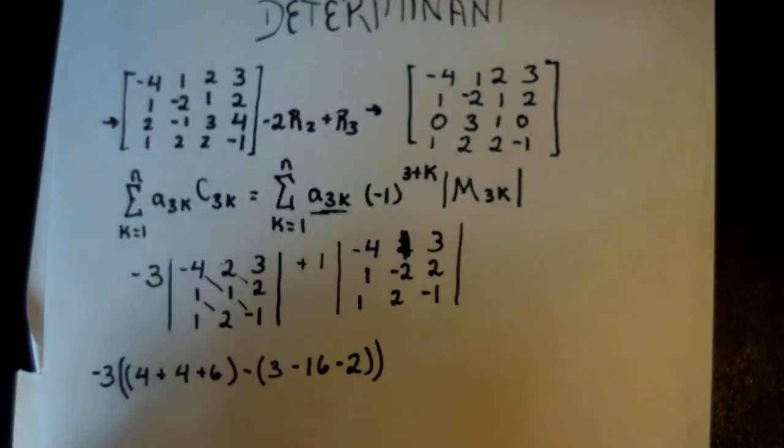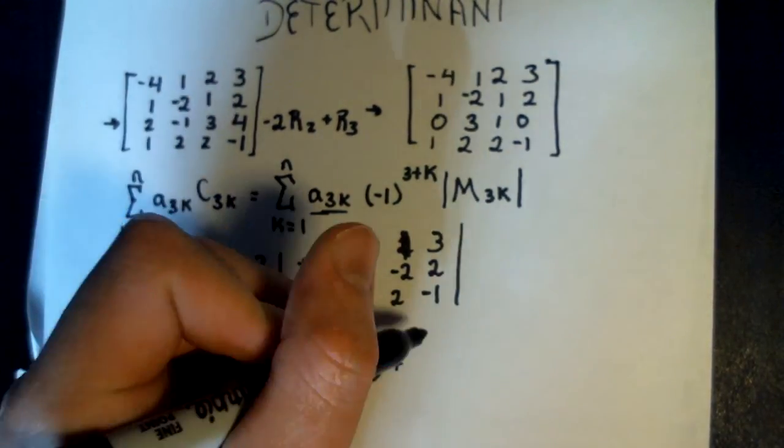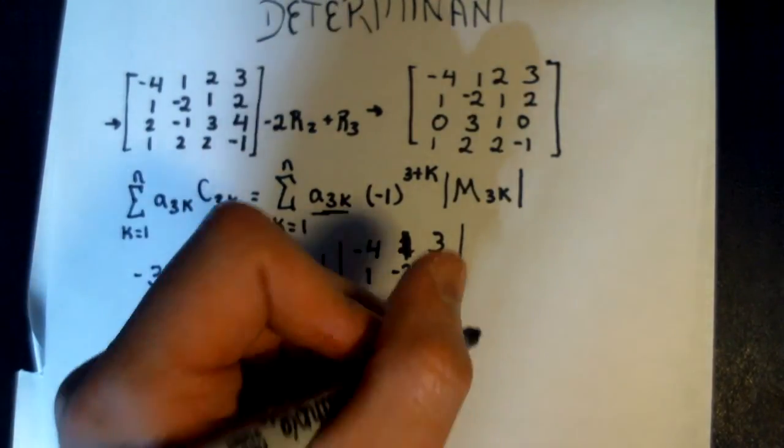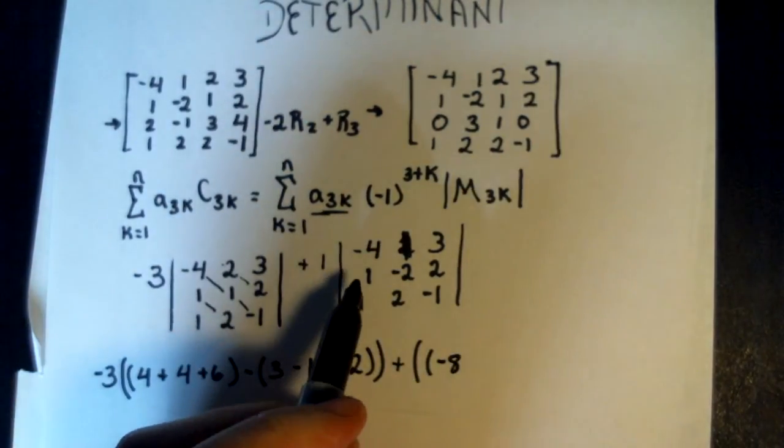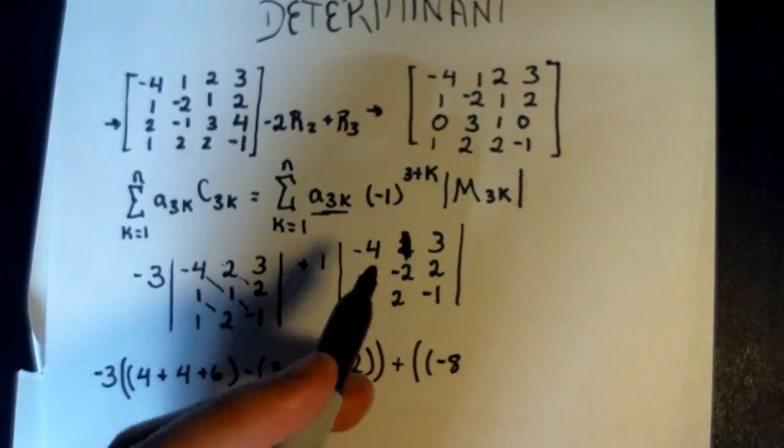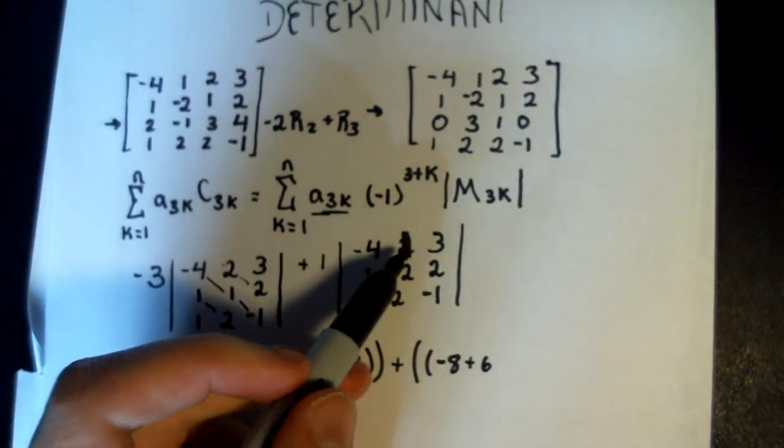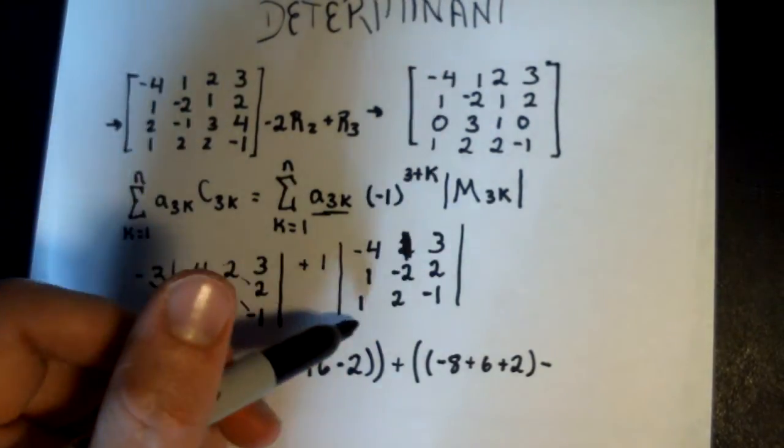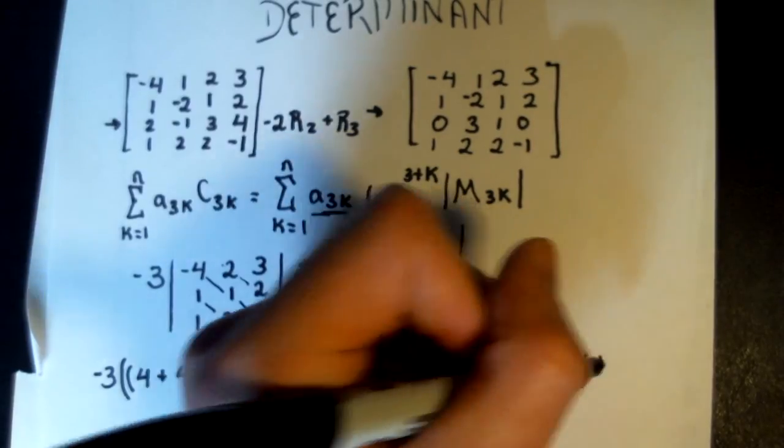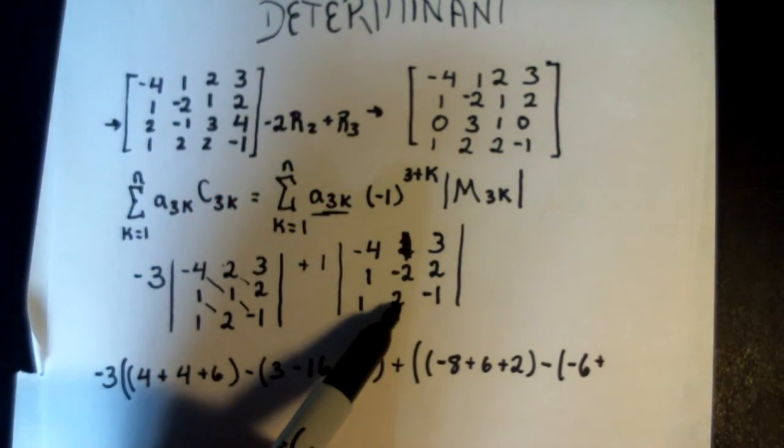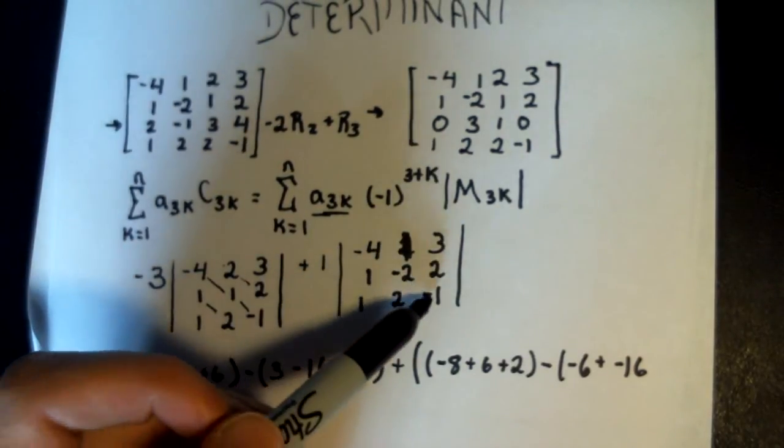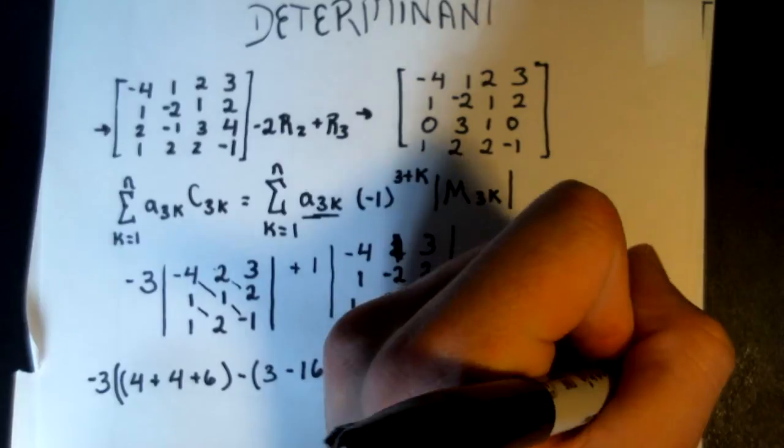And now this other determinant. This is going to be done through the same process. We have negative 4 times negative 2 times negative 1. That's going to be negative 8. Plus 3 times 1 times 2 is 6. 1 times 2 times 1 is 2. Minus this diagonal, so that's minus negative 6, minus 2 times 2 times negative 4. So that's 4, negative 16. And finally we have 1 times 1 times negative 1, plus negative 1.